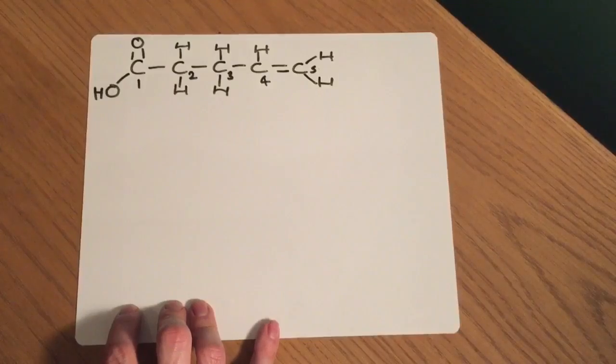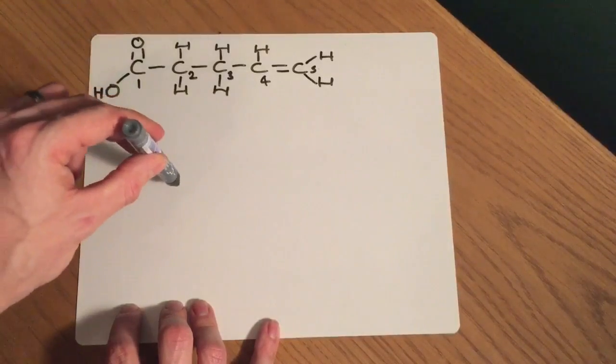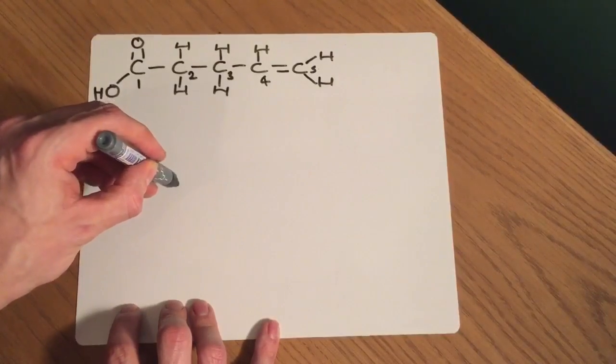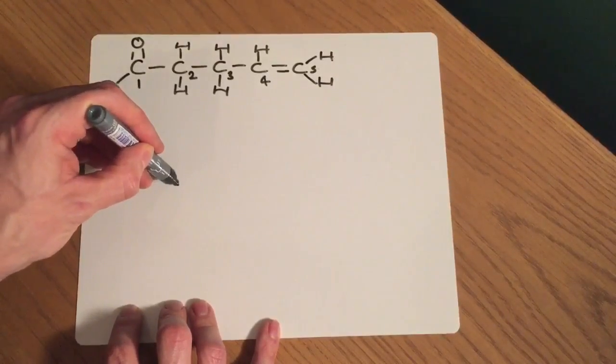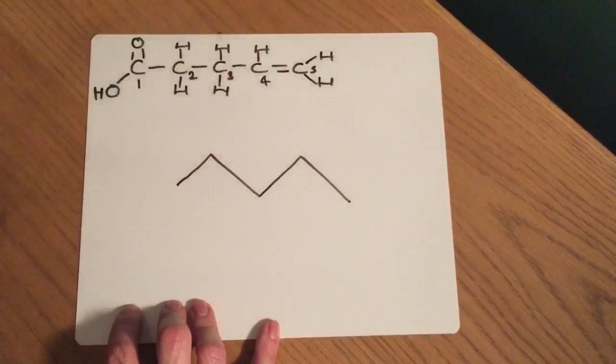Now for skeletal, every end of every line and every bend in the line represents a carbon atom. So as soon as your pen touches the page that's your first carbon, that's my carbon one. And then we do a zigzag pattern so that would be carbon one to two to three to four to five just like that.